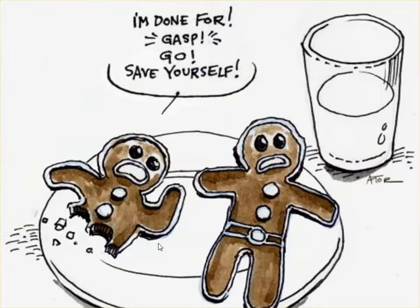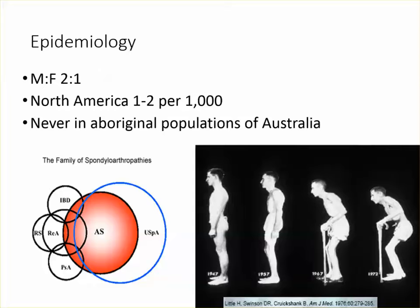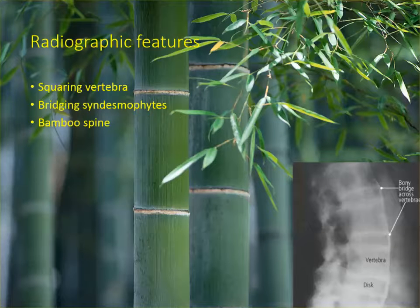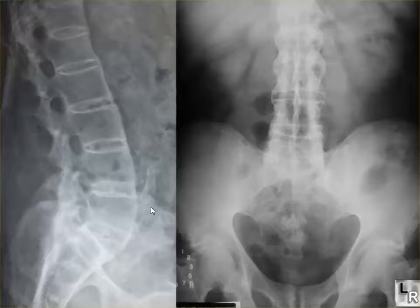This is just a reminder that when ankylosing spondylitis patients get a fracture, it's a through-and-through fracture. There are many ways to describe ankylosing spondylitis historically. It's two-to-one males to female, one to two per thousand. It's never found in aborigines. One percent worldwide incidence. Ankylosing spondylitis is a seronegative spondyloarthropathy, similar in disease process to reactive arthritis and psoriatic arthritis. The x-ray appearance is called bamboo vertebra — squaring of the vertebra, bridging syndesmophytes. The whole spine is fused, the sacroiliac joints are fused, and the vertebral bodies look very square.